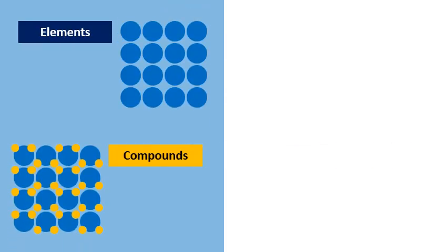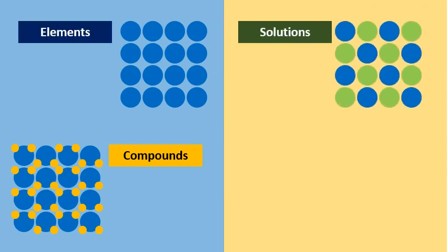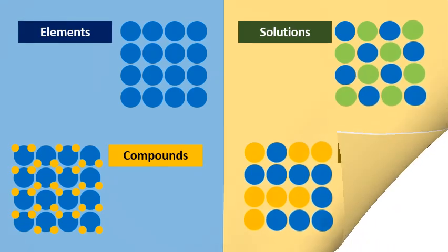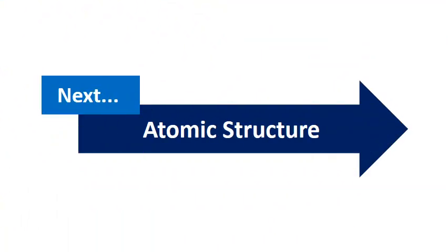So to recap, we've got our pure substances like elements and compounds, and then we have our impure mixtures like solutions which are evenly mixed and suspensions which are not. Join us next time as we examine how to build atoms using the periodic table of elements.